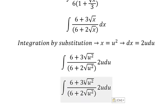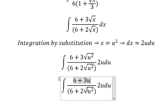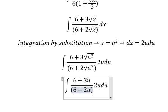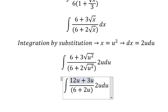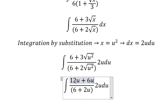So we get u and u: 2u multiplied with number 6 and 3u, which gives us 12u over 6u squared.